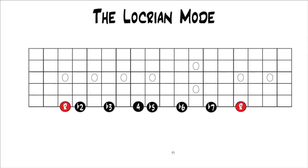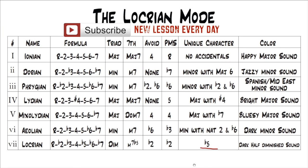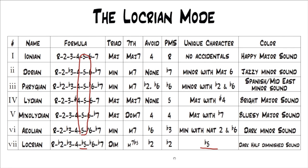The parent major scale is the flat 2. So if this was G Locrian — which is drawn on your screen — you have G, A flat, B flat, C, D flat, E flat, F. A flat is your parent major scale, just one half step up from the root of the Locrian mode. The unique character of course is the flat 5, the diminished 5th — it's the only mode that has a diminished 5th; all the rest have perfect 5ths. Because of the intervals in the Locrian mode and that flat 5 especially, you get a dark half diminished or minor 7 flat 5 sound. It's the darkest of all the modes.